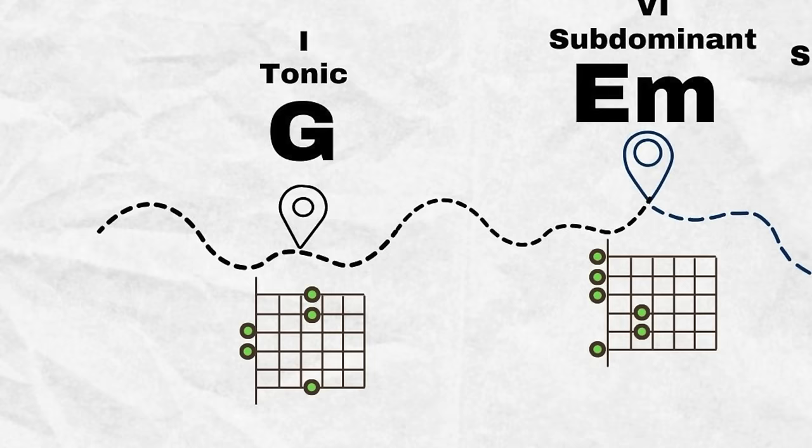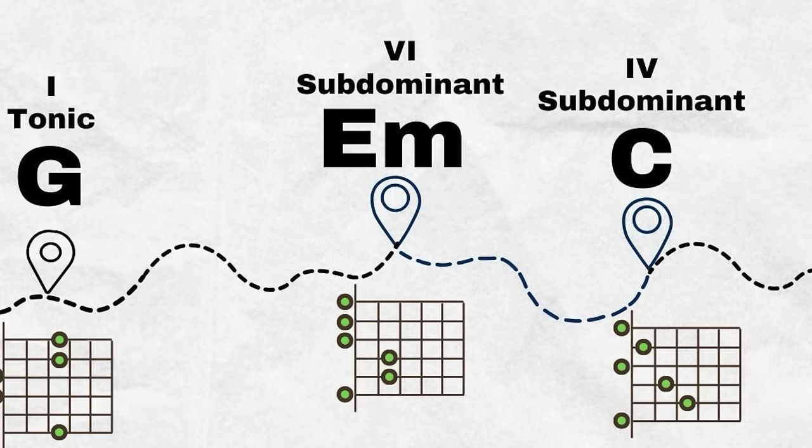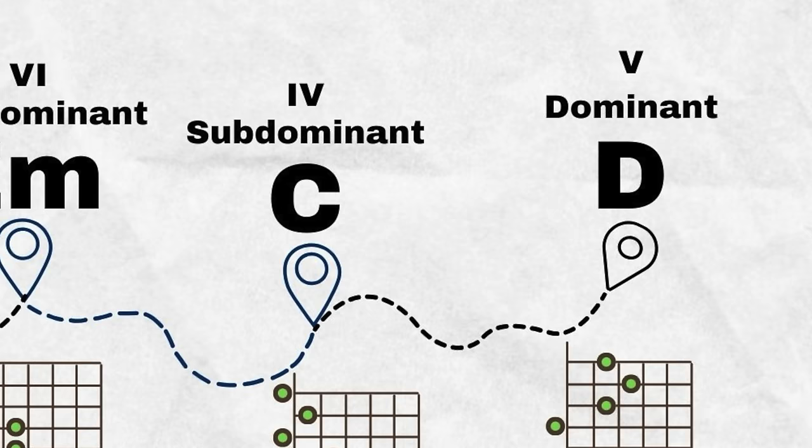G is the tonic chord, or chord one. E minor is a subdominant chord built on the sixth scale degree. C major is another subdominant chord built on the fourth scale degree, and D is a dominant chord built on the fifth scale degree.